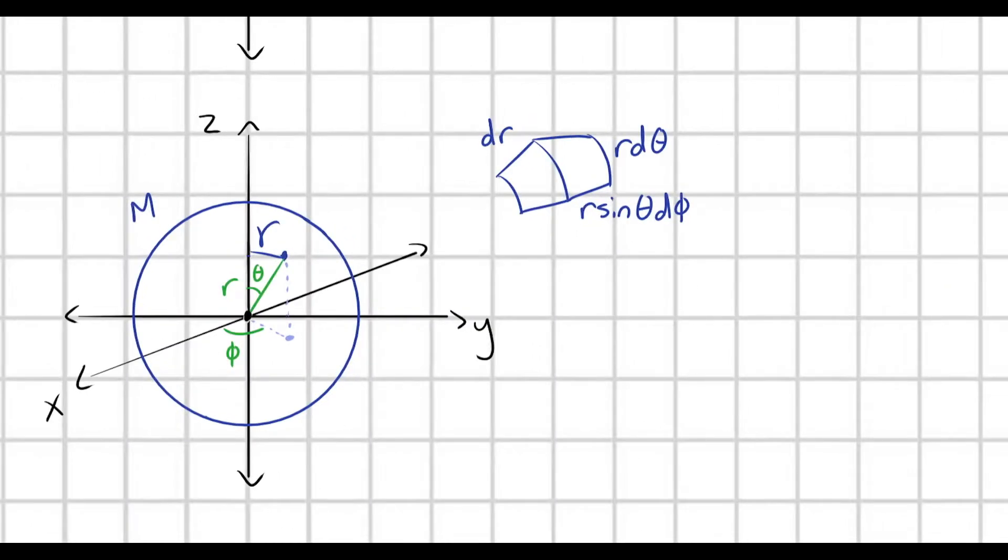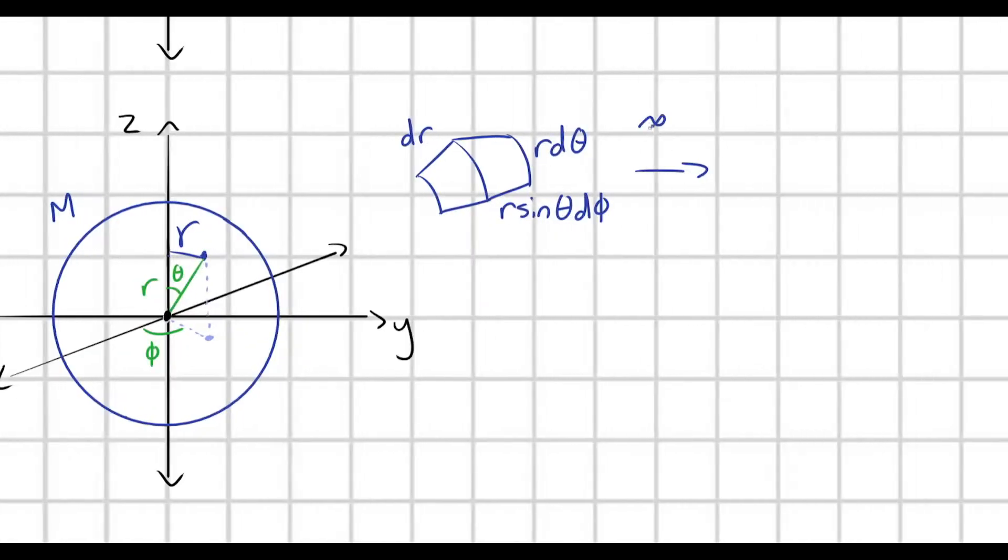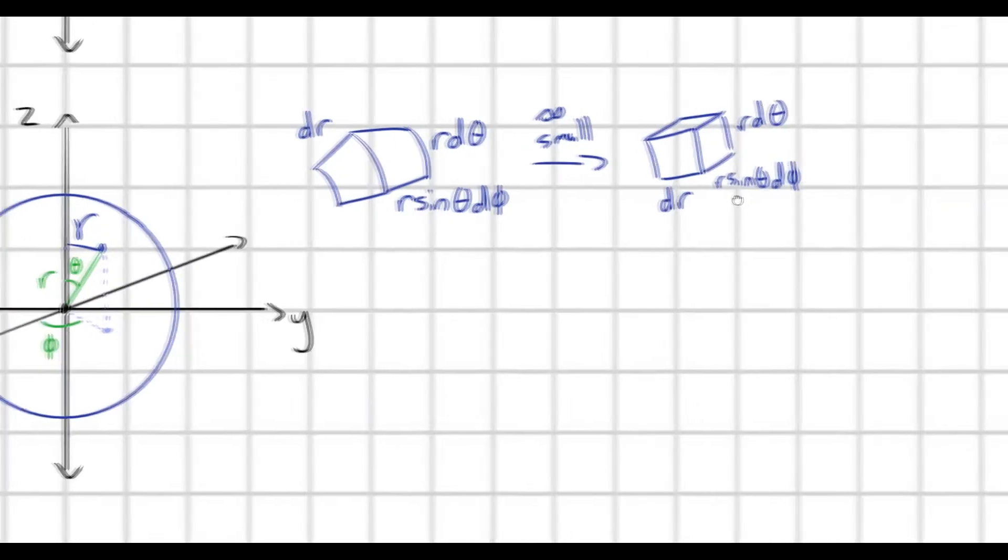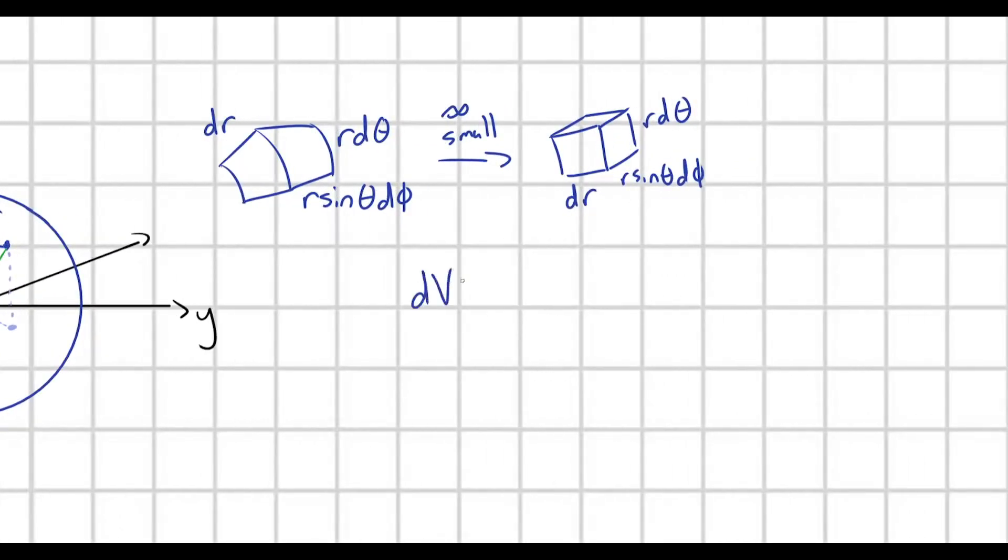And again, when we limit this down infinitely small mass elements, then this is going to essentially look like a little cube with each of these components. With some dr, some r sine theta d phi, and some r d theta.